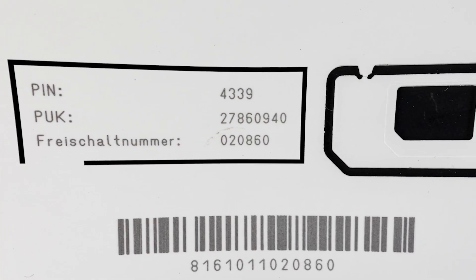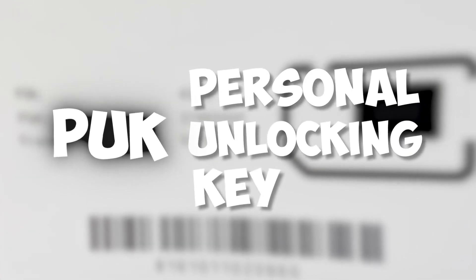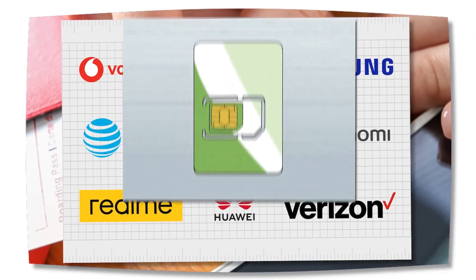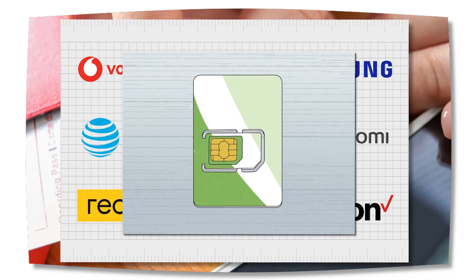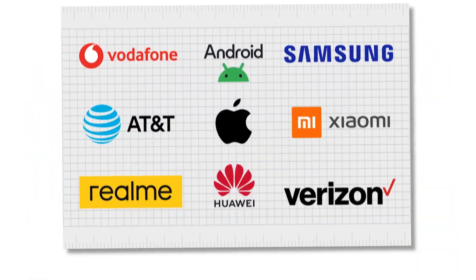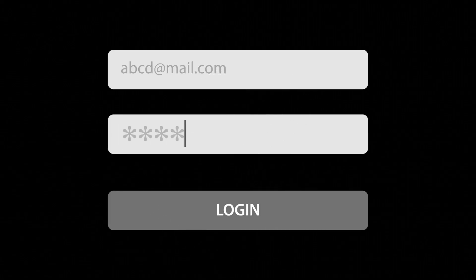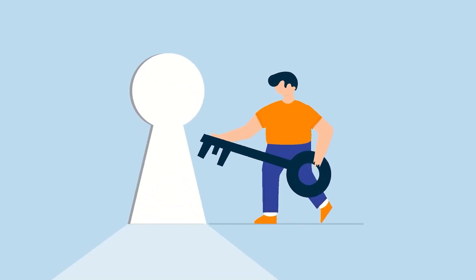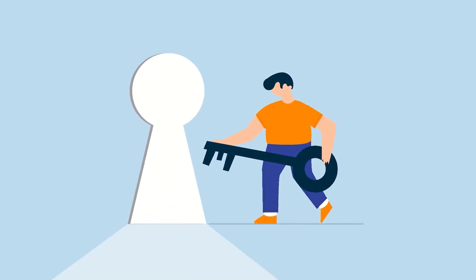Before we get into the solutions, let's quickly go over what a PUK code actually is. PUK stands for Personal Unlocking Key. It's given to you by your mobile carrier and is used to unlock your SIM card if you enter the wrong PIN too many times — usually three times in a row. Without it, your SIM stays locked and you can't call, text, or use mobile data. Now let's look at three ways to get past that lock without the PUK code.